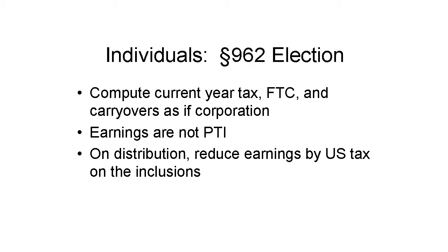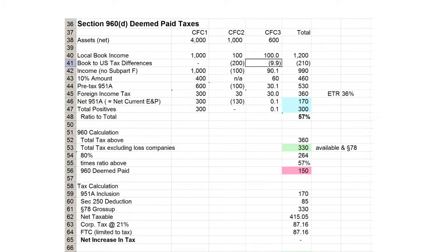For a corporation, the story ends after this example — the earnings and profits of CFC 1 and CFC 3 are previously taxed and excluded from income when distributed. Individuals may make an election under Section 962 to compute their current year tax on 951(A) and Subpart F inclusions as if they were a corporation, getting the Section 250 deduction and the deemed paid credits. However, an individual does not get the previously taxed income treatment on earnings of a CFC when there is a 962 election. Instead, the additional U.S. income tax, if any, reduces the E&P. Thus, an individual owning the CFCs in the example would still have 330 minus 87 of income to pick up later when CFC 1 and CFC 3 distribute their earnings.